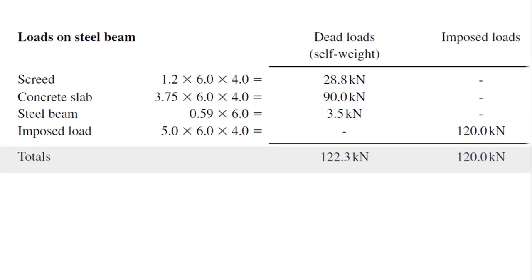Now we can find total dead and imposed loads. Get the sum of these three values. We can get total dead load as 122.3 kilonewtons. Since we have only one imposed load, total imposed load will be 120 kilonewtons.